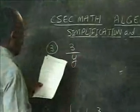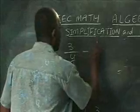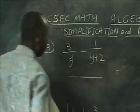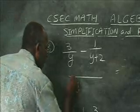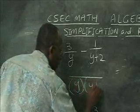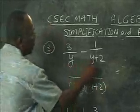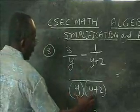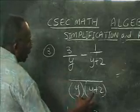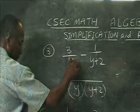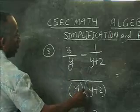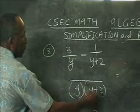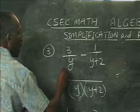Let's say we have three on y minus one on y plus two. The LCM will be y multiplied by y plus two, as we indicated before — multiplication of the two denominators. We have to divide the LCM by y. When you divide, the y will cancel with the y, so y plus two would be left to multiply by the three.